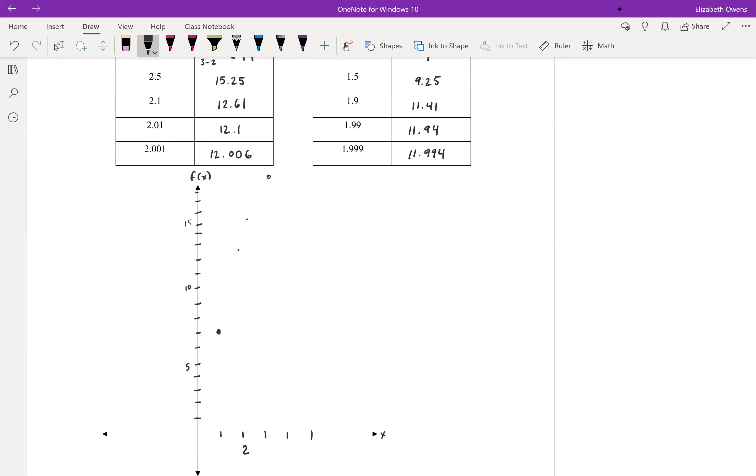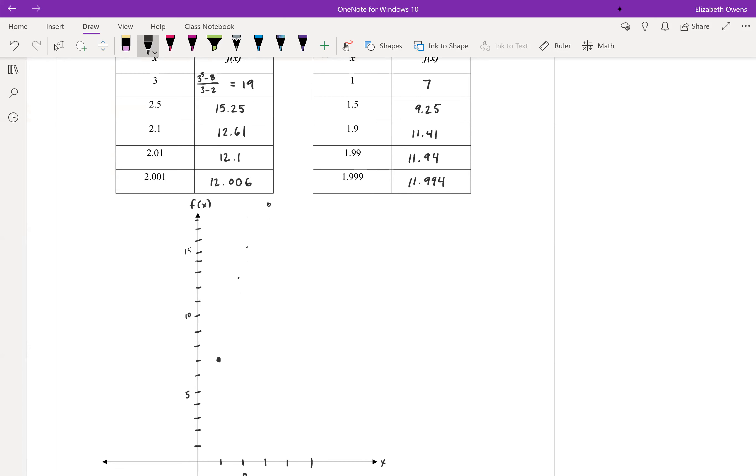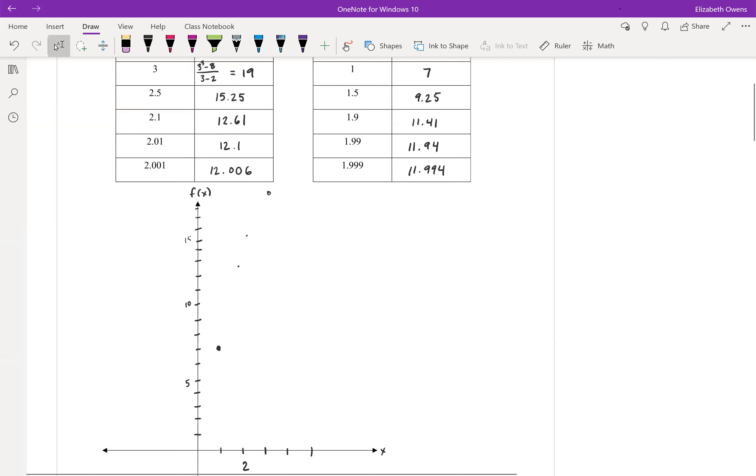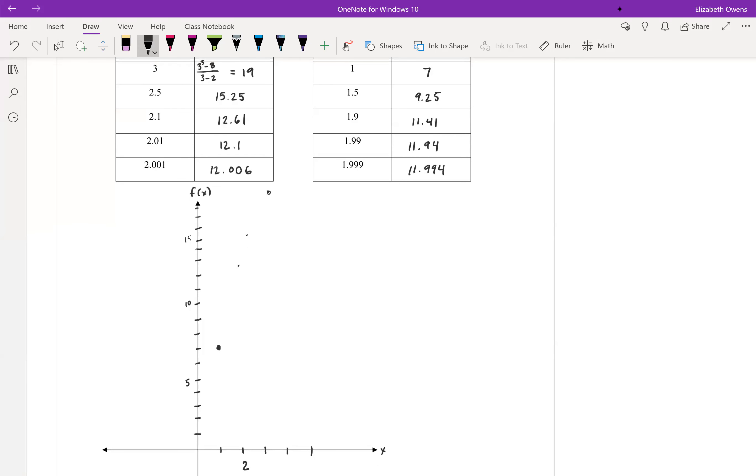All right, 2.001 comma 12.006. Those are too precise for my kind of wonky graphing, so that is just gonna get really really close there. Let's see, what else could I plot? I could do 1.5, 9.25. 9.25. Okay. Still looks a little weird. Probably because my axes are a little off here.